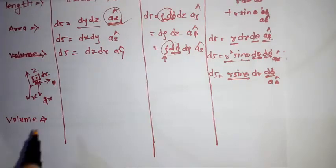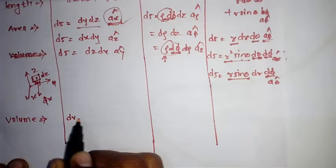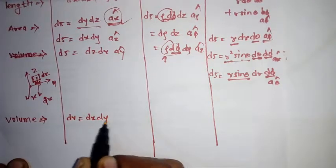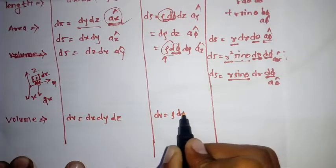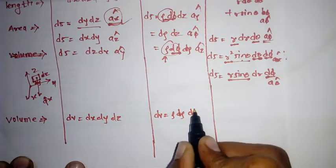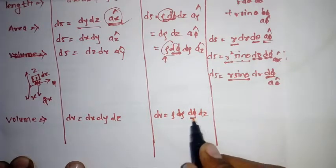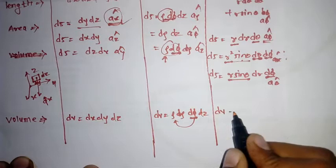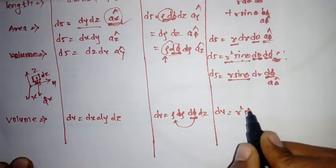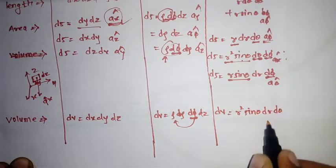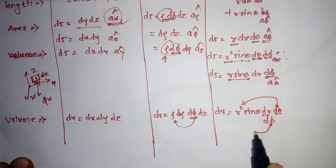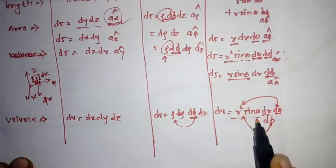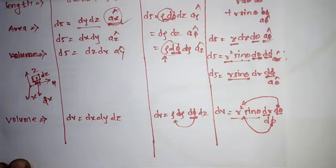Now for volume, there is one formula each. In Cartesian, dV equals dx dy dz. In cylindrical, dV equals rho d_rho d_phi dz — with d_phi, rho comes. In spherical, dV equals r squared sine(theta) dr d_theta d_phi — with d_theta, r comes, and with d_phi, r sine(theta) comes, giving r squared sine(theta). This is how we write the length, area, and volume formulas.